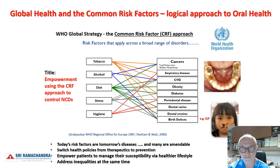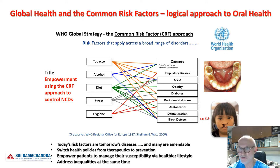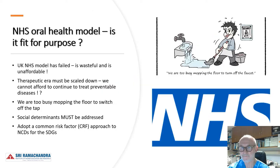That paragraph 19 statement mentioned specifically the common risk factor approach, and here is why it makes tremendous sense to have oral diseases included in non-communicable diseases. The risk factors listed are tobacco, alcohol, diet, stress, and hygiene. These cause major non-communicable diseases such as cardiovascular disease, cancers, respiratory diseases, and diabetes/obesity — but these are precisely the same risk factors that cause oral diseases: dental caries, periodontal disease, erosion, and some congenital birth defects such as orofacial clefts.